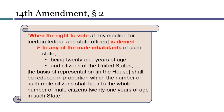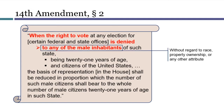Section 2 imposed some consequences on states that denied the right to vote to any of its adult male citizens. This provision would be triggered if the right of adult males to vote was denied on the basis of race, but also on the basis of property ownership or seemingly any other attribute. Now, of course, the text was explicitly limited to males.